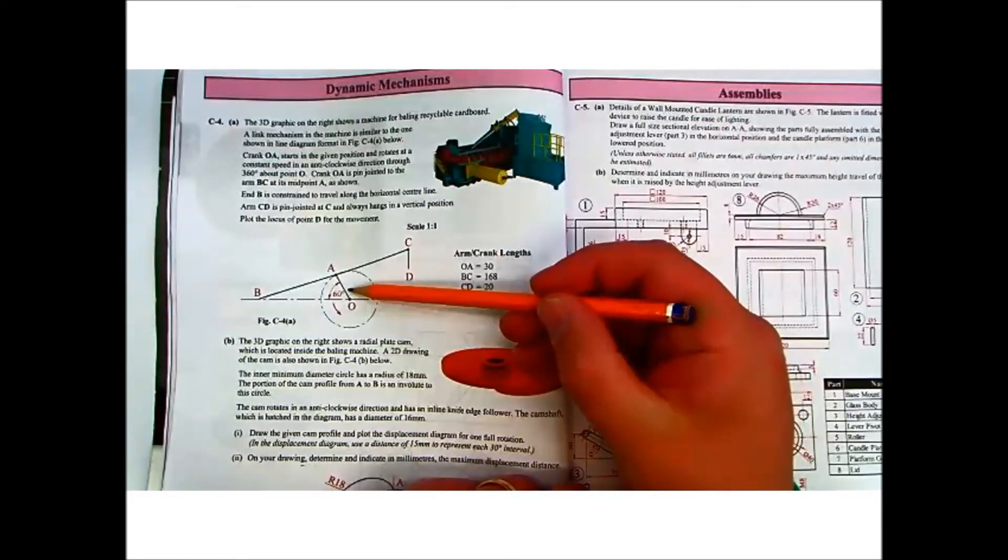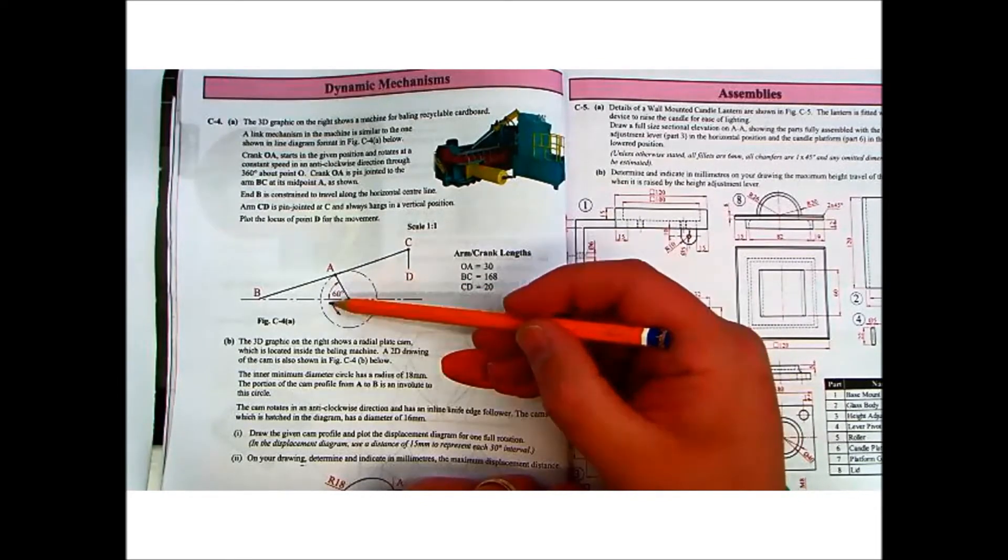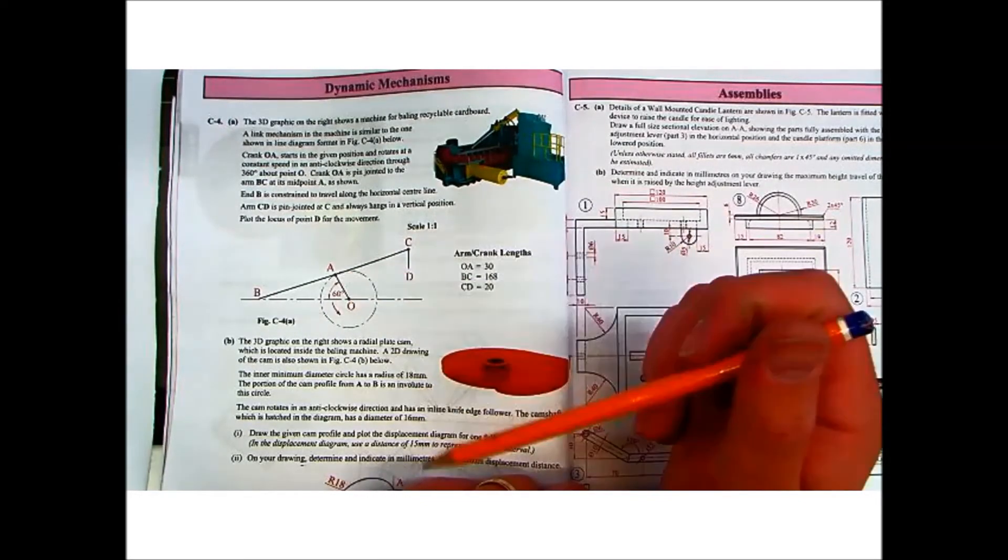Crank OA, this one here, starts in a given position and rotates at a constant speed in an anti-clockwise direction through 360 degrees about O. So as you see here, it rotates anti-clockwise about O at constant speed.